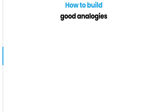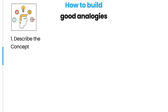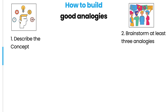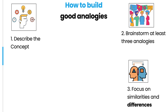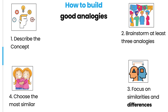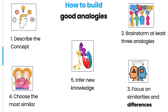Here are the steps to use analogies when you study complex subjects in math, engineering, physics, or any science-based academic field, or even when you learn new skills. Step one: describe the concept. Step two: brainstorm new analogies — at least three. Step three: pay attention to the differences too. Step four: choose the analogy that ranks higher, that is, the one with more similarities. Step five: infer new knowledge by asking new questions.